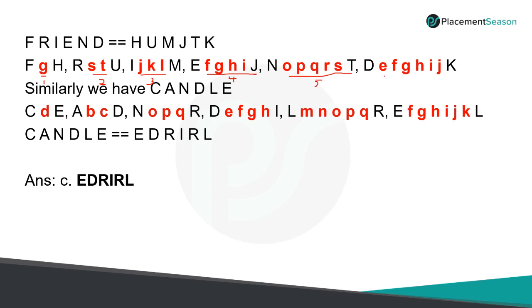And D to K is six. So comparing the first word FRIEND to the given coded word, it shows that the difference gradually increases from one to six.